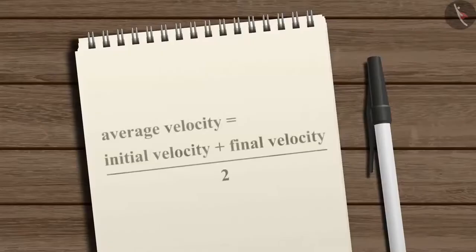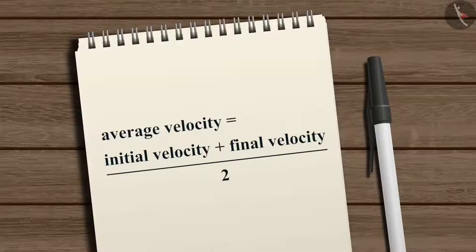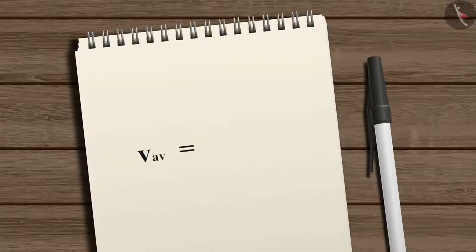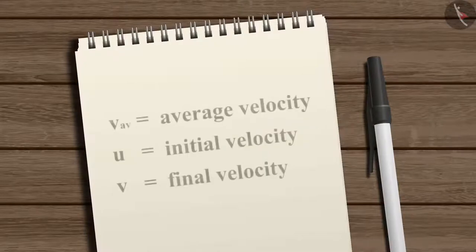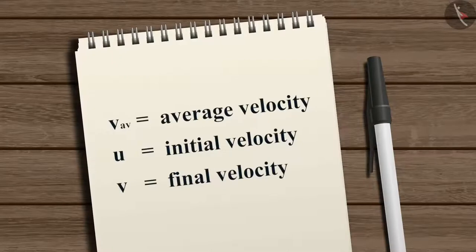Average velocity is equal to initial velocity plus final velocity, the whole divided by 2. Mathematically, V_average equals U plus V, whole divided by 2, where V_average is the average velocity, U is the initial velocity, and V is the final velocity of the object.